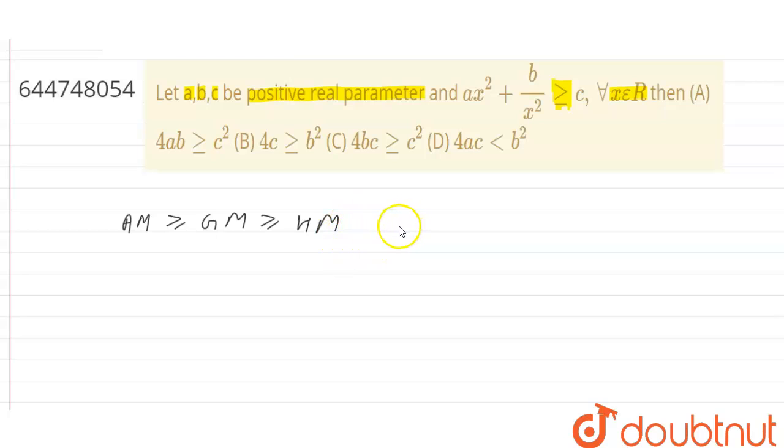To apply AM, GM, HM method the variables should be positive. The variables we are going to use are a, b and c, which is given as positive, and since we use x², x² is also positive. So we are going to use here AM, GM and HM method.